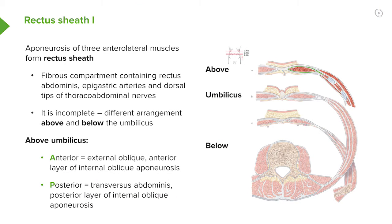We have the anterior layer of internal oblique aponeurosis. Posteriorly, behind rectus abdominus, internal oblique sends a layer that goes behind rectus abdominus. So posteriorly, we have the posterior layer of internal oblique aponeurosis.